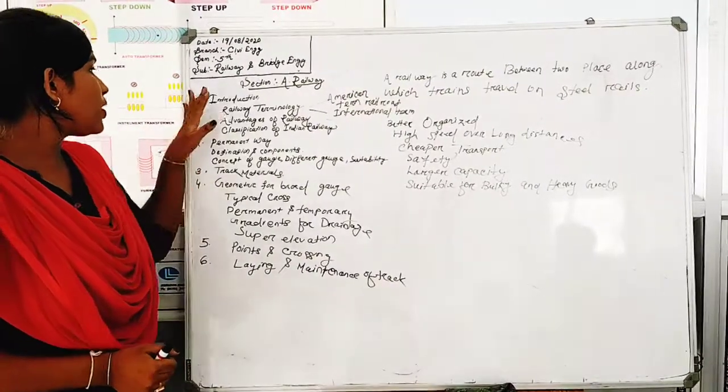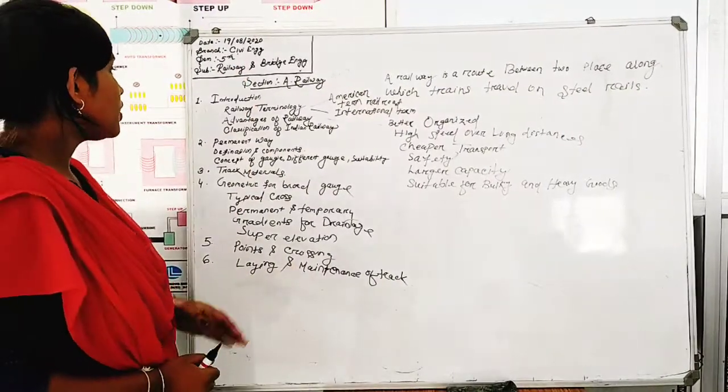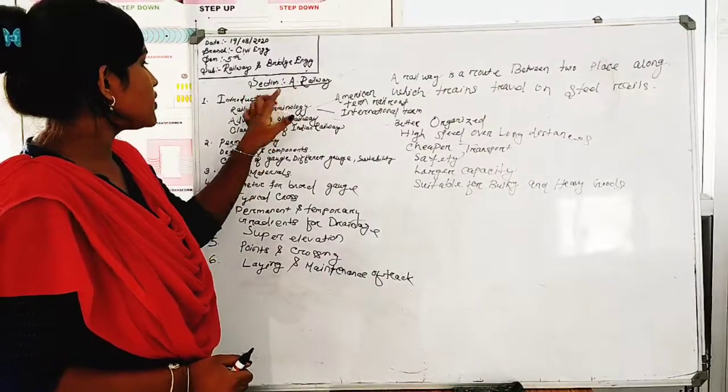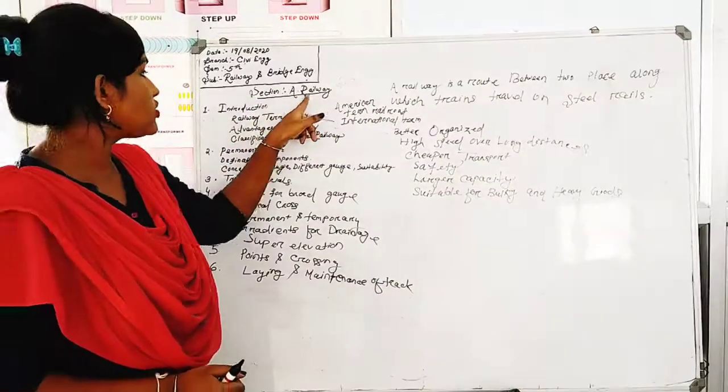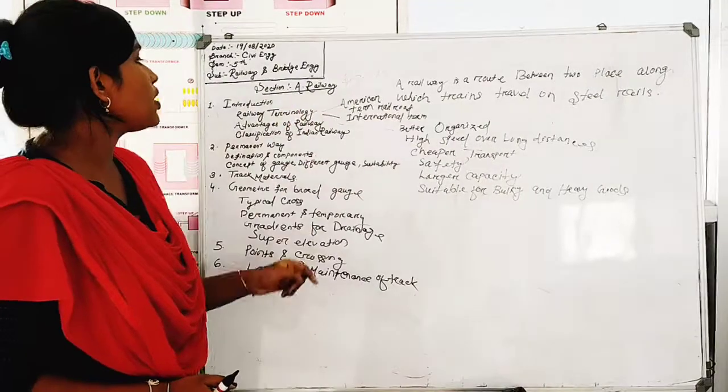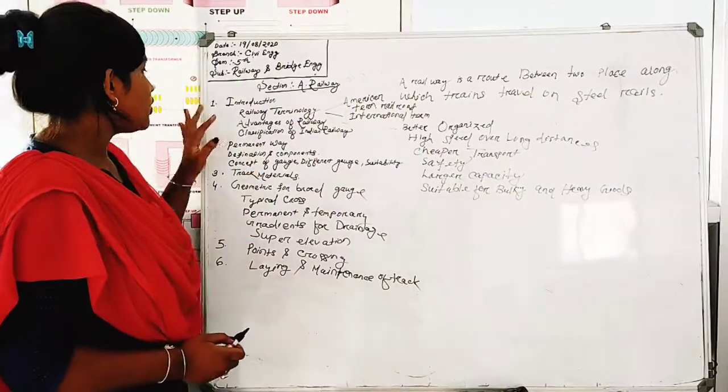Keep standing. Your topic is railway and bridge engineering. Railway and bridge engineering is divided into two sections. Part one is railway engineering, with three sections of railway engineering.